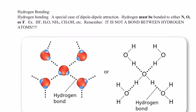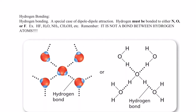A special type of dipole-to-dipole attraction is called hydrogen bonding. Please do not think that if a molecule has the element hydrogen in it, it can automatically hydrogen bond — that is not true. Hydrogen, in order to be able to hydrogen bond with a neighboring molecule, must be bonded to either N (nitrogen), O (oxygen), or fluorine. As you recall, N, O, and F are the three most electronegative elements.